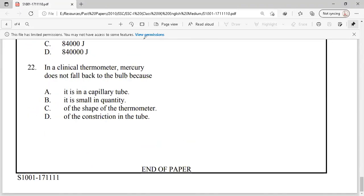Question number 22. In the clinical thermometer mercury does not fall back to the bulb because it is in the capillary tube, it is in a small quantity, because of the shape of the thermometer and because of the constriction in the tube. This is known as capillary action. Option D is the right answer.